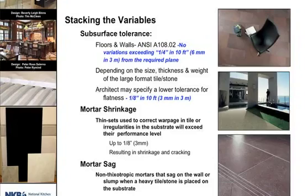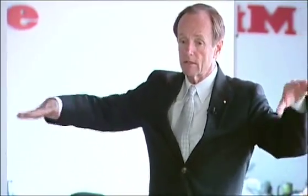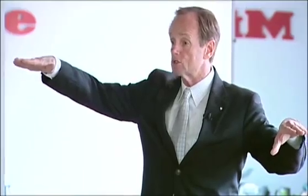When looking at large formats, we consider what we call stacking the variables. We want to look at the subsurface or substrate tolerances — for floors and walls. We want to make sure we don't exceed a variation of a quarter of an inch in 10 feet or a sixteenth of an inch in a foot. If you're going into someone's home selling them large format tile, make sure that floor is relatively flat. Otherwise, a large piece slightly out of kilter can have one end way up as it's being installed. Surface preparation has to be done in advance.